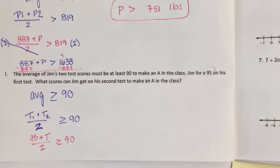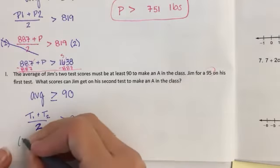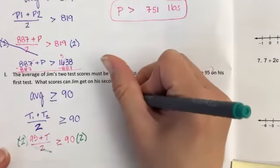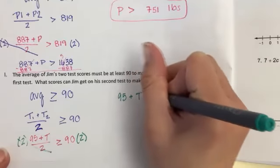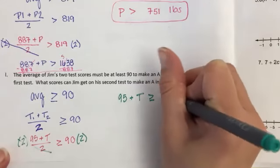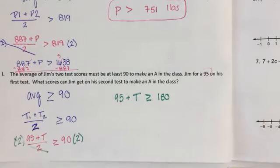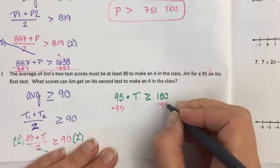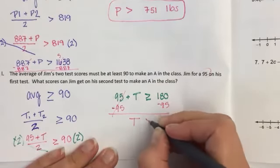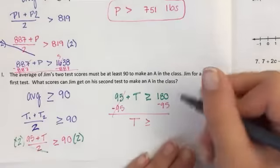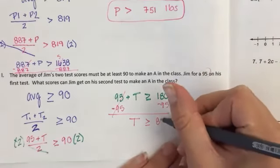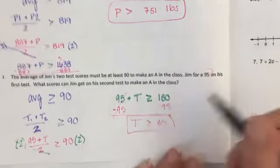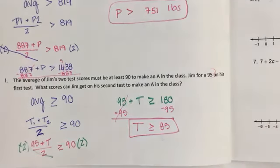Then we can solve. I'd multiply both sides by a two. 95 plus T has to be greater than or equal to 180. Subtract by 95 on both sides. T is greater than or equal to 85. And that's how you would solve that last one.